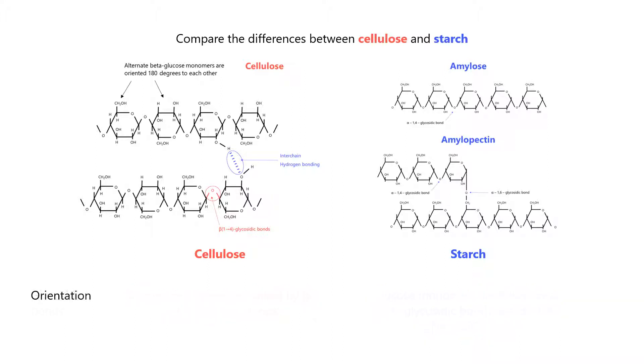Now let's compare the orientation of the glucose monomers. In cellulose, alternate glucose monomers are rotated 180 degrees with respect to each other. In starch, all glucose monomers have the same orientation.